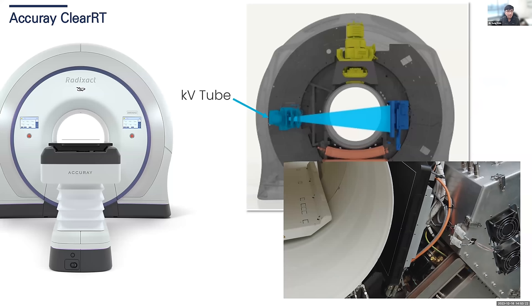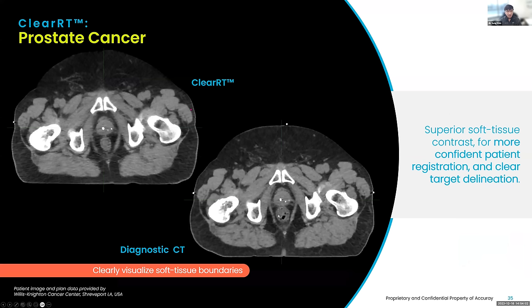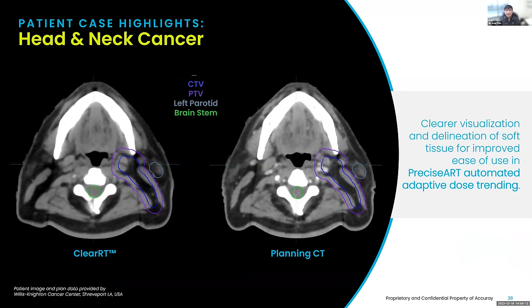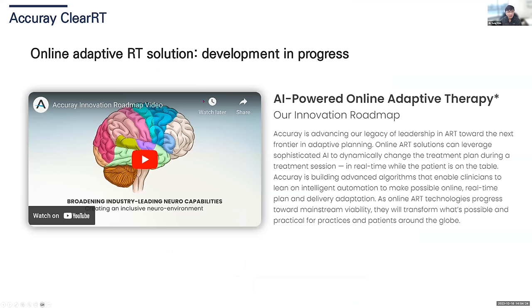Another vendor is Accuray, which attaches a large flat panel detector for KVCT. The planning CT and ClearRT system look very similar. Yesterday we had a symposium and the users of ClearRT were very satisfied with its image quality. Using this quality, we can draw CTV and PTV, and they are currently doing offline adaptive solutions, with online adaptive planned for perhaps next year.